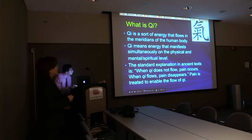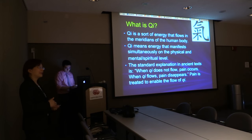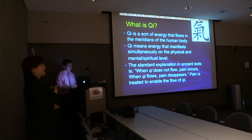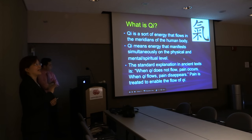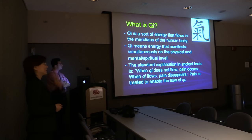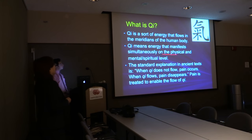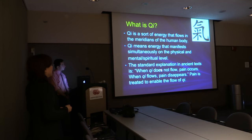This picture shows the character for qi. Qi is the energy that flows in the meridians of the human body. Qi flows in the human body like blood flows in the arteries and veins — the artery brings blood from the heart to the extremities, and the vein takes the blood back to the heart. Qi flows in the meridians from the head to the toe, inside and outside, and flows around the arms and throughout the body. The standard explanation in ancient texts is: when qi does not flow, pain occurs; when qi flows, pain is relieved.